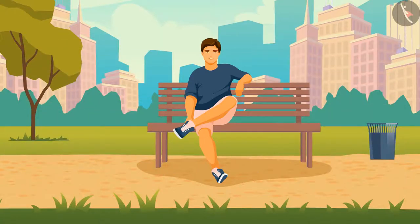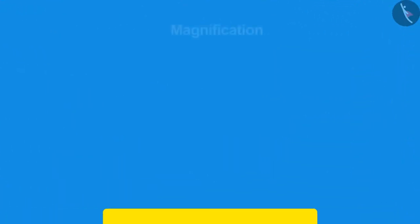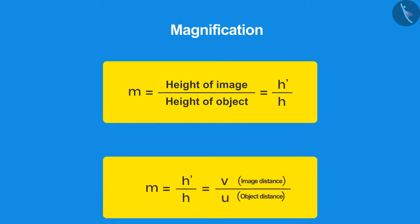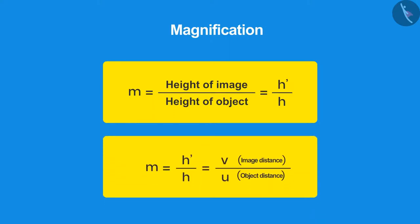Along with the lens formula, there is another property known as magnification. Like in the case of a mirror, it is the ratio of the height of the image to the height of the object, which indicates how large or small the image is compared to the object. This mathematical relation shows the magnification of the lens. It can also be represented as the ratio of image distance to object distance.